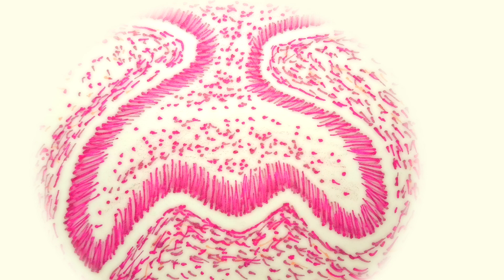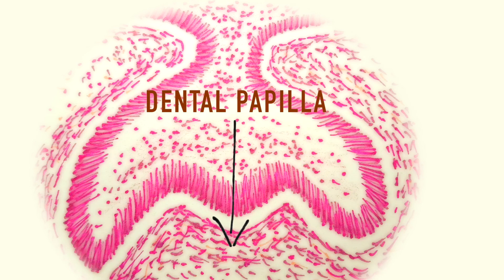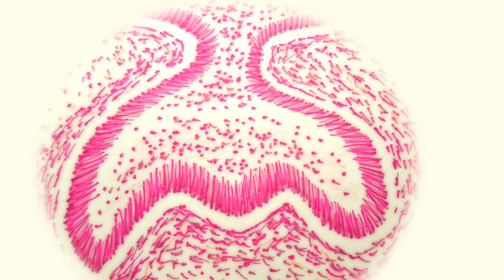The enamel organ forms into a cap surrounding the mass of dental papilla formed from the mesenchyme. The entire bud is then surrounded by the dental follicle which is also formed from the mesenchyme. The cap stage occurs usually during the ninth week in utero.